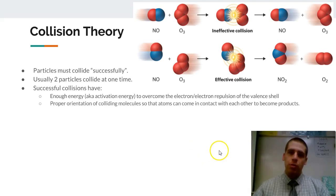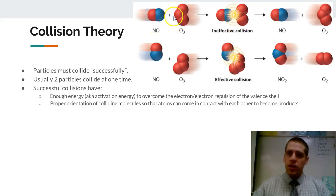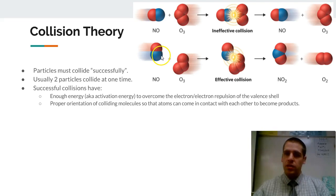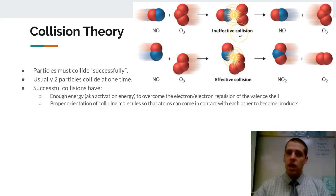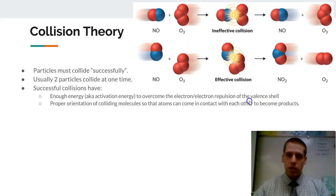They also have to have the correct proper orientation. If through random motion they happen to collide in one way, that's not a successful collision. But if they're oriented the right way — if one of the molecules is spun 90 degrees — now we can have a successful collision. Some collisions will be unsuccessful because they collide in the wrong orientation, and other collisions can be unsuccessful because they collide with not enough energy. You could collide with the correct orientation but not enough energy and it still wouldn't make a good reaction.